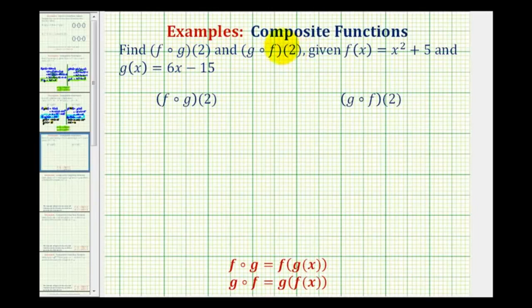We want to find the composite function values f of g of 2 and g of f of 2, given f of x equals x squared plus 5 and g of x equals 6x minus 15. So to find f of g of 2, it's going to be easier if we apply the definition where f of g is equal to f of g of x, seen here.